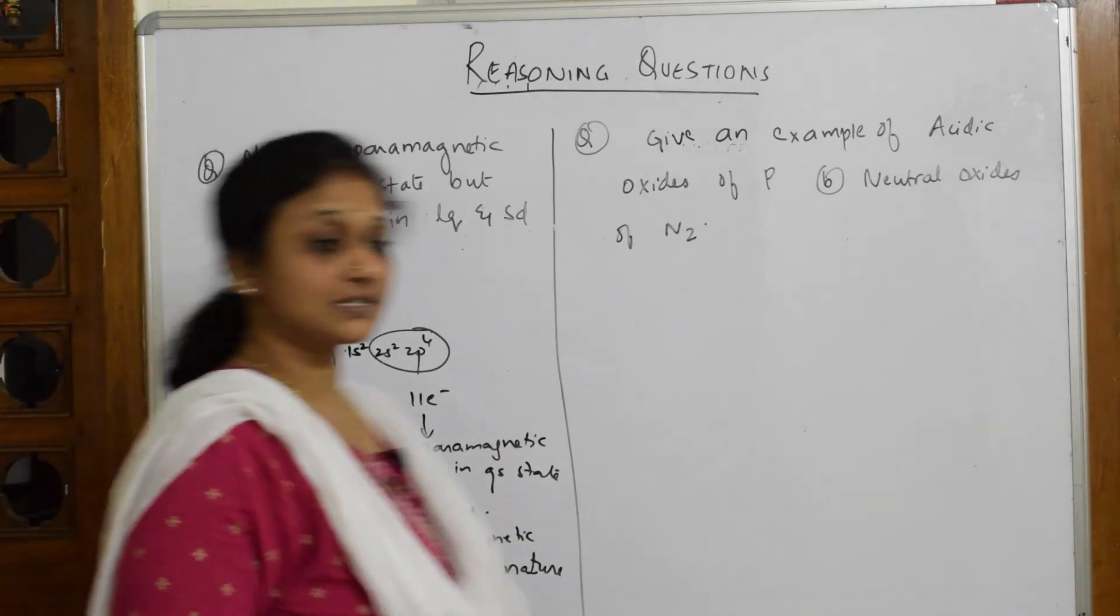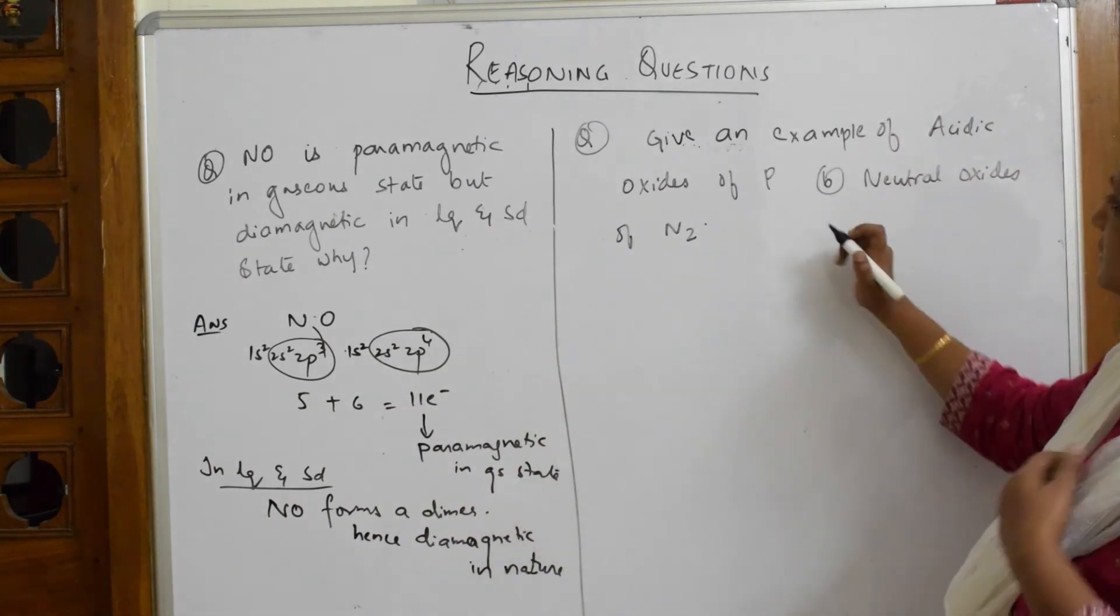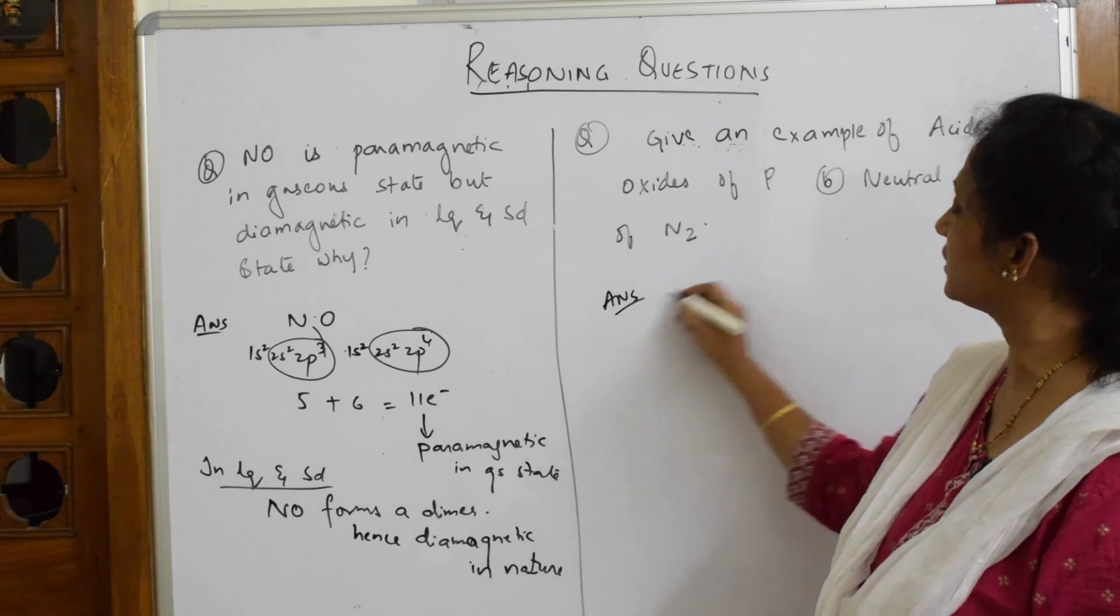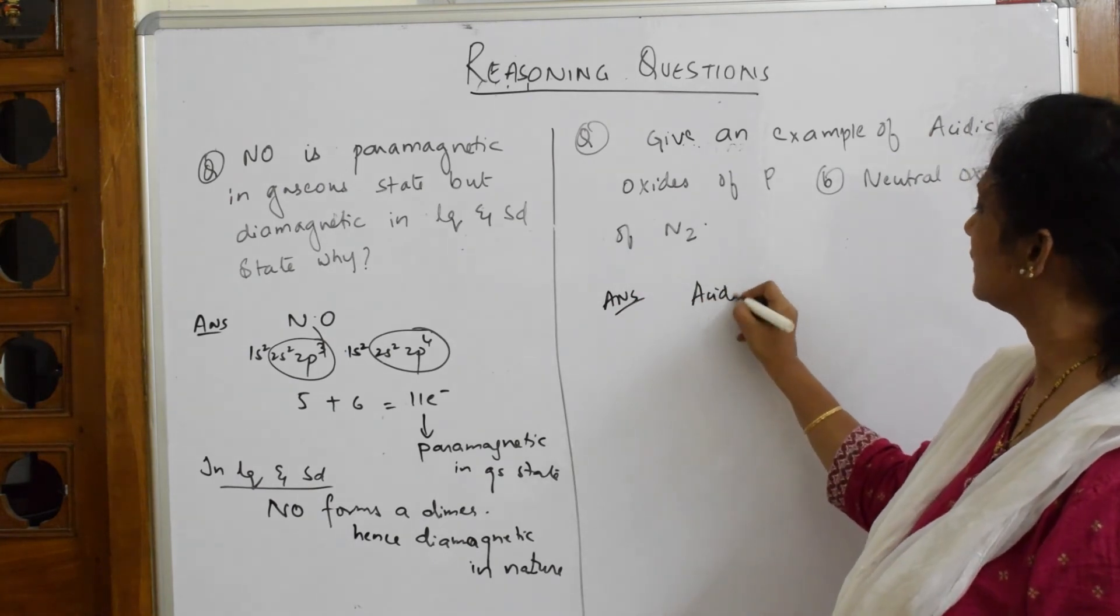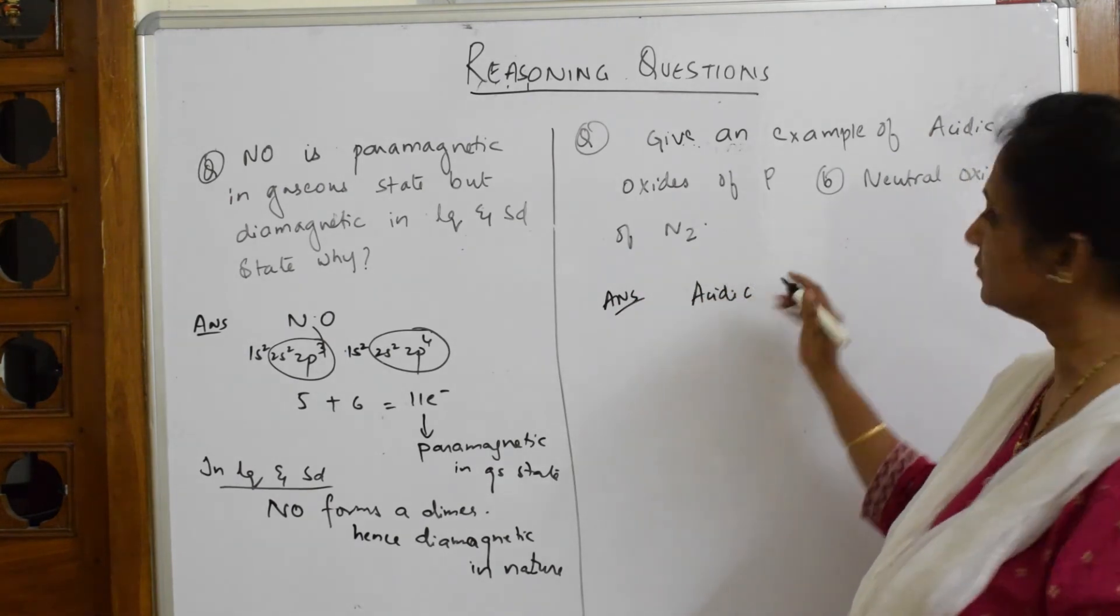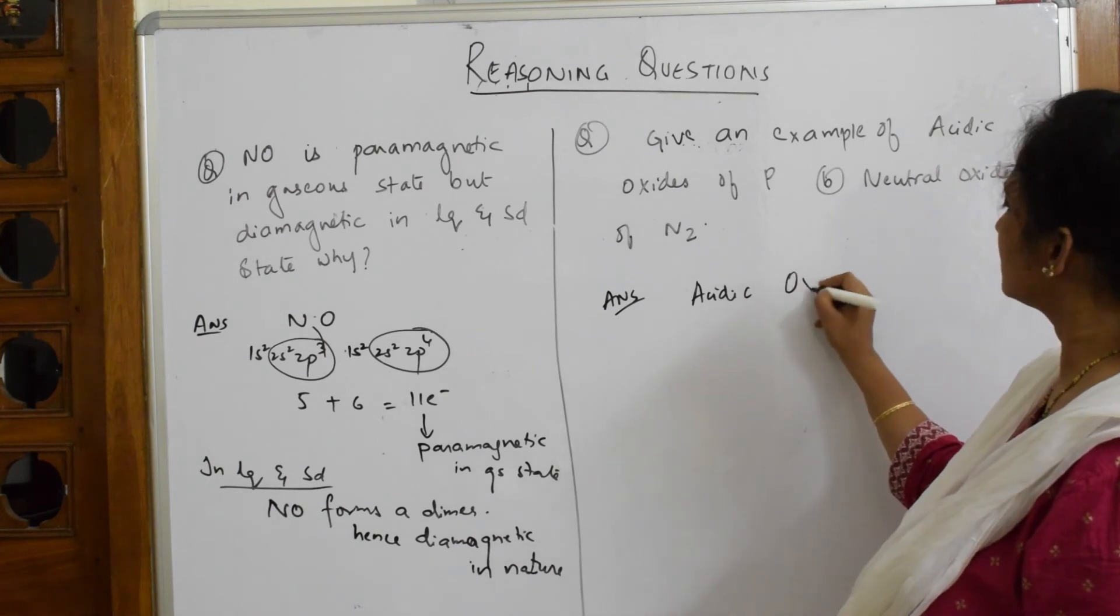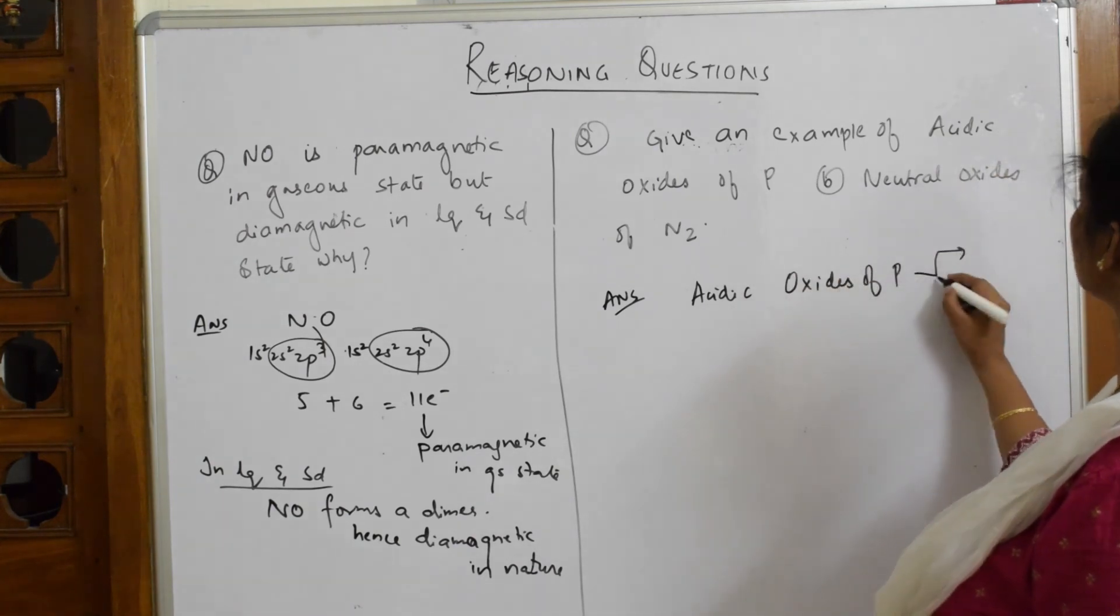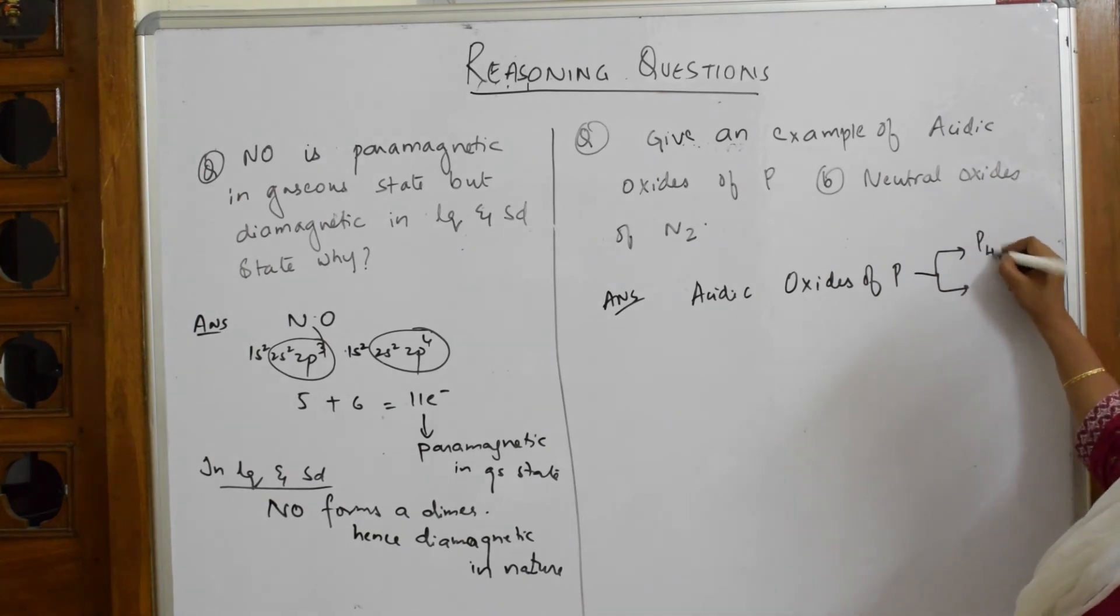Let's see this next question. They have asked me to write acidic oxides of phosphorus. It is a direct question, very easy. Acidic oxides of phosphorus: there are two acidic oxides. One is P₄O₆ and the next one is P₄O₁₀.